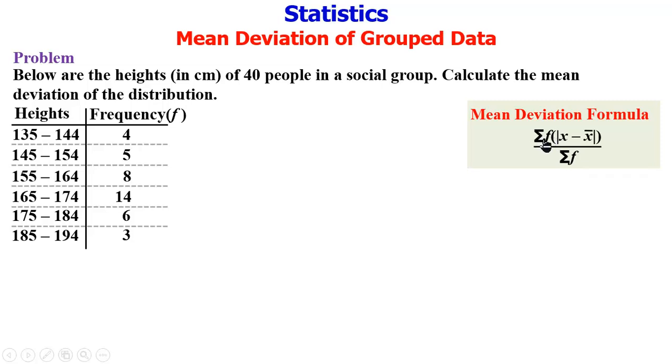Which is sigma f into absolute value of x minus x̄ over sigma f. So this is summation of the product of the frequency multiplied by x minus the mean, then divided by the sum of the frequency. It means we are going to find the mean of this distribution.